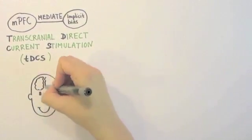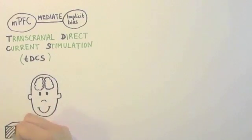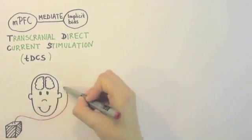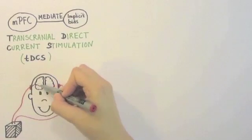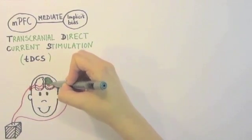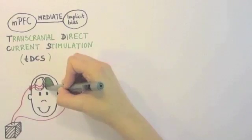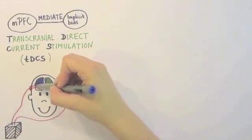With this method, it is possible to either increase or decrease cortical excitability in a specific brain area, depending on the type of stimulation. This is done by applying a weak current through electrodes placed on the scalp.